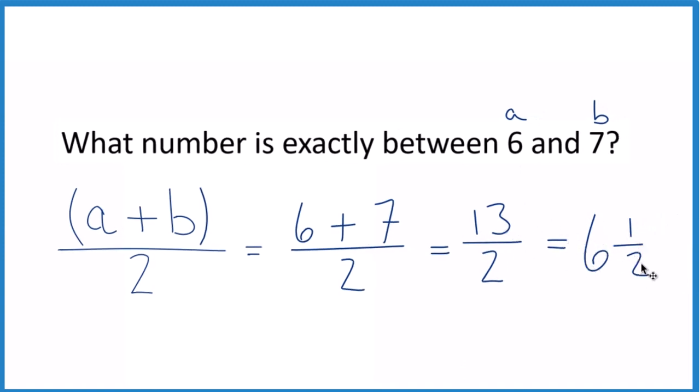They have the same value. So in answer to our question, the number exactly between 6 and 7 is 13 halves. Or you could call it 6 and 1 half.